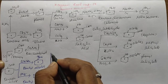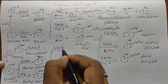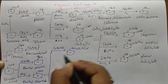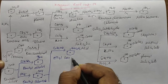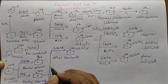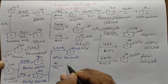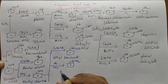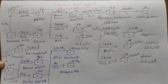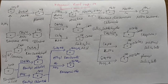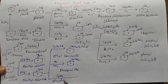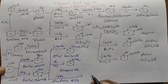Benzoyl Chloride reacts with various reagents. When Benzoyl Chloride reacts with Ethyl Alcohol, it can form Ethyl Benzoate. When Benzoyl Chloride reacts with Aqueous NH3, it can form Benzamide. When Benzoyl Chloride reacts with Benzene in influence of Anhydrous AlCl3, it can form Benzophenone.